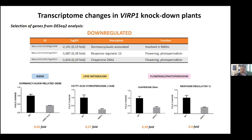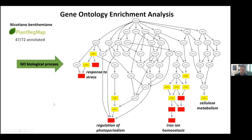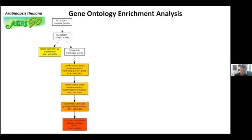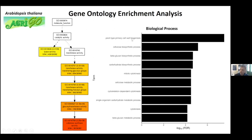If we go to the bigger picture with a larger number of genes affected, they fall within the same groups. In GO analysis, the genes affected in these suppressed plants fall into four categories: iron-ion homeostasis, regulation of photoperiodism, lipid metabolism, cell wall biogenesis, and responses to stress. This was done in Nicotiana benthamiana, which doesn't have a well-annotated genome. We repeated the same analysis in Arabidopsis and again saw similar categories as the most important ones in terms of up- and down-regulation upon VIRP1 suppression.